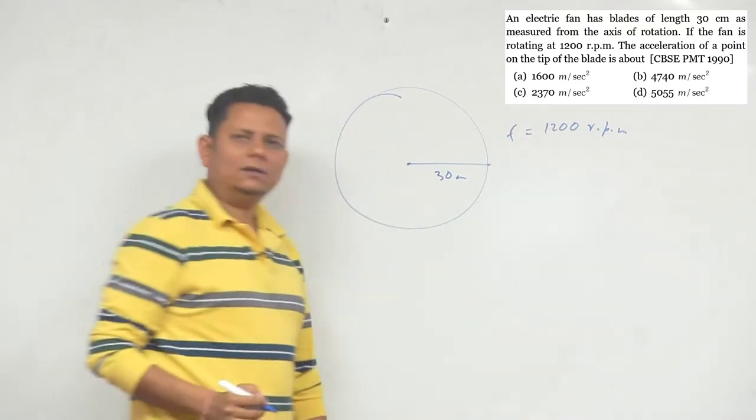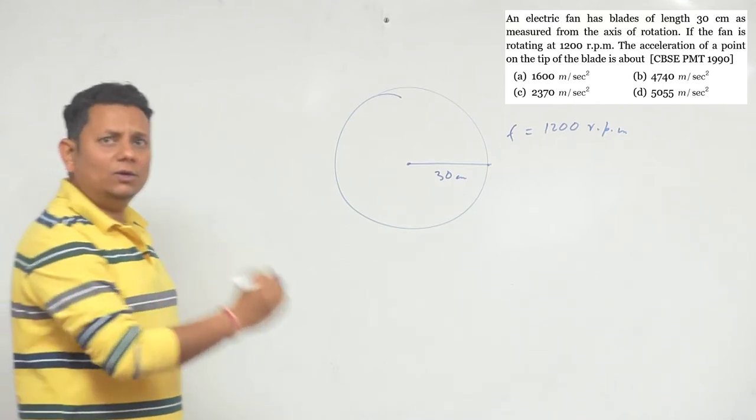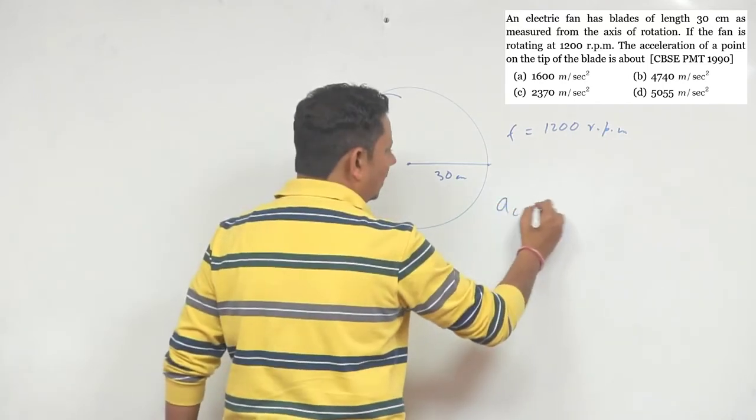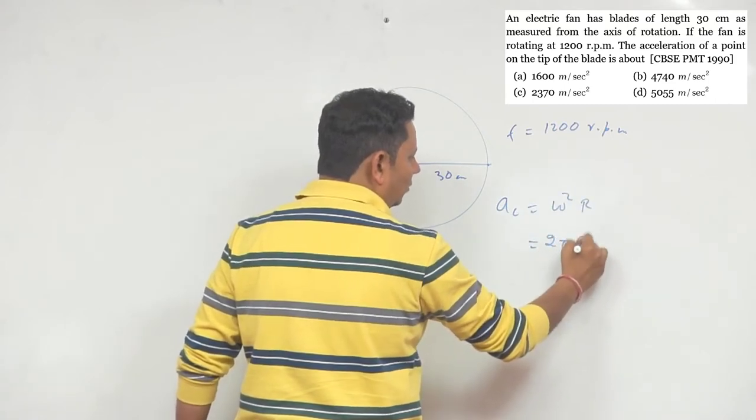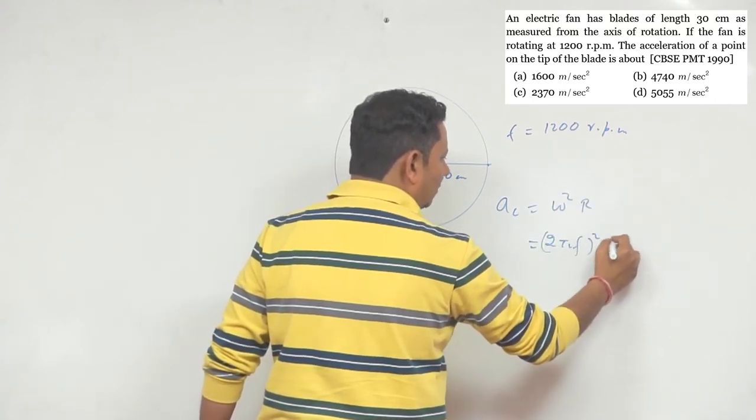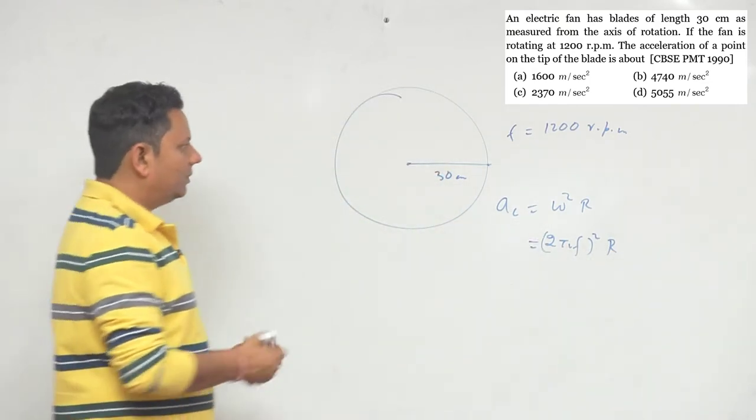In this case, we know that the acceleration will be equal to omega square r. You can use 2 pi f square multiplied by r. Put the values and the answer will be very easy.